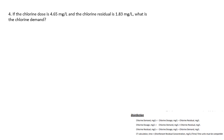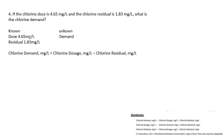Question number four: if the chlorine dose is 4.65 mg/L and the chlorine residual is 1.83 mg/L, what is the chlorine demand? These questions are examples of what is being used up during breakpoint chlorination — you put in 4.65 and you're left with 1.83, so everything in between was consumed before reaching breakpoint. The demand formula is chlorine dosage minus chlorine residual: 4.65 minus 1.83 gives a chlorine demand of 2.82 mg/L.